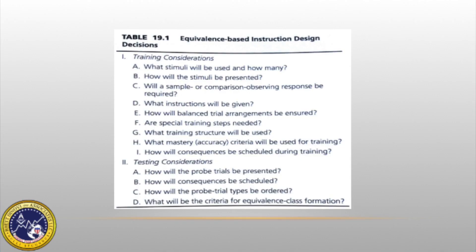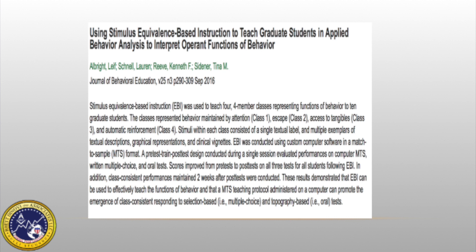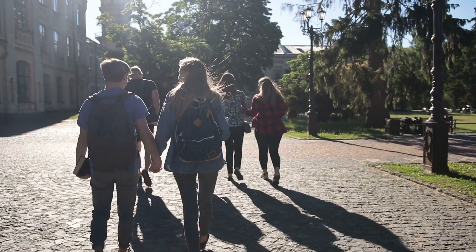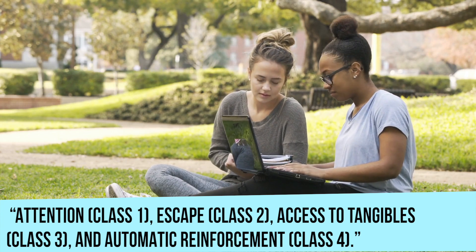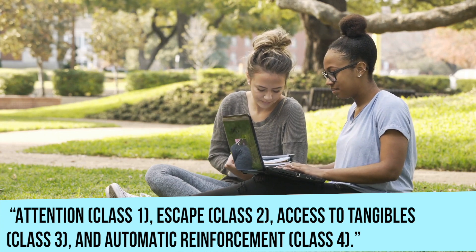Although there is no single method for successful EBI design, research has shown there are specific training and testing variables that may increase the generation of equivalence classes. The following table outlines the major decisions that can guide the planning for EBI. A substantial amount of research demonstrates the effectiveness of EBI in increasing skill acquisition with neurotypical adults. Albright and colleagues conducted a study in 2014 where EBI was used to teach four class members representing the functions of behaviors to graduate students. The classes represented behaviors maintained by attention, escape, access to tangibles, and automatic reinforcement. Stimuli within each class consisted of a textual label and multiple exemplars of textual descriptions, graphical representations, and clinical vignettes.